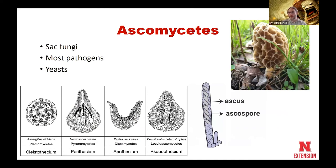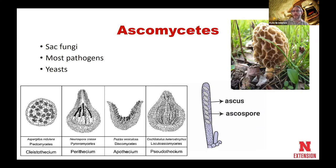The next group are our ascomycetes. Most of our pathogens tend to be ascomycetes, and they are our sac fungi. If you've ever looked at a spruce branch and seen black little pimple-like structures along the branch, those are perithecia — or they may be cleistothecia, depending on what fungus we're looking at. Those are the actual fungal fruiting structures. Within each one of those sacs there are a bunch of asci, and within each ascus will be a number of ascospores — the reproductive structures of fungi.